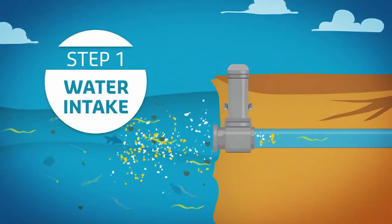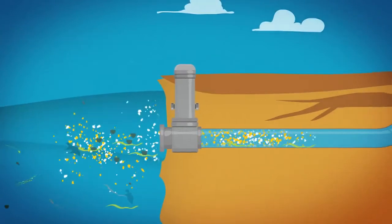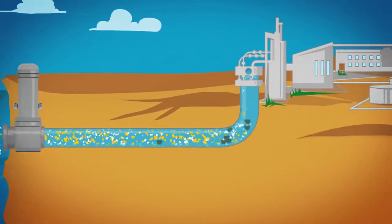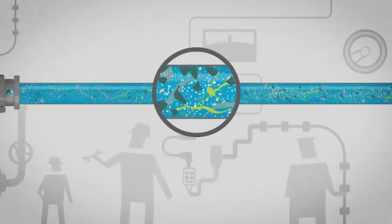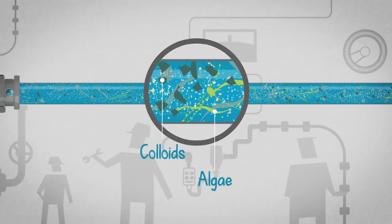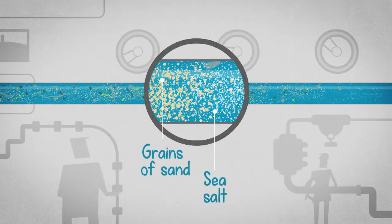To protect the marine ecosystem, seawater is pumped at a speed three times slower than a fish swims. This water is then filtered to remove all particles such as algae and sand.